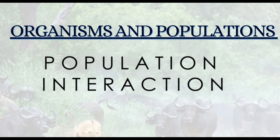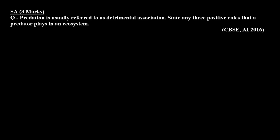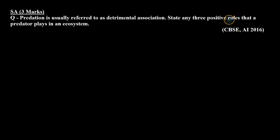Hello everyone. We are discussing previous year questions of the chapter Organisms and Populations, specifically the topic of population interaction. In today's session we are going to discuss a short answer type question of 3 marks which was asked in the CBSE Board All India examination 2016. The question is: predation is usually referred to as a detrimental association. State any 3 positive roles that a predator plays in an ecosystem.